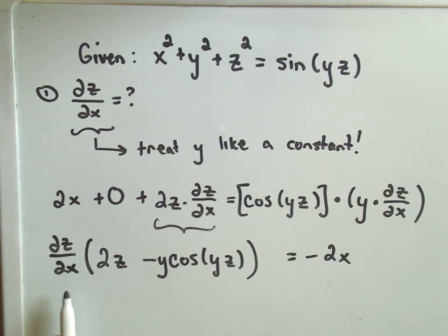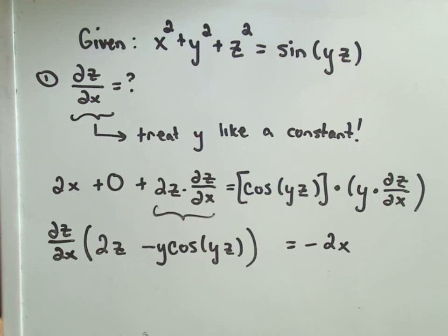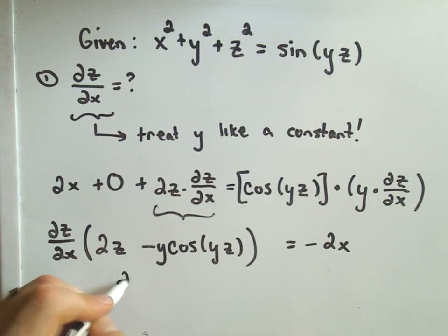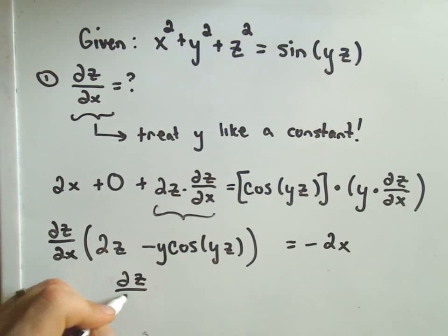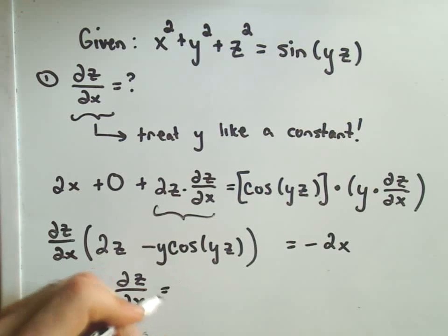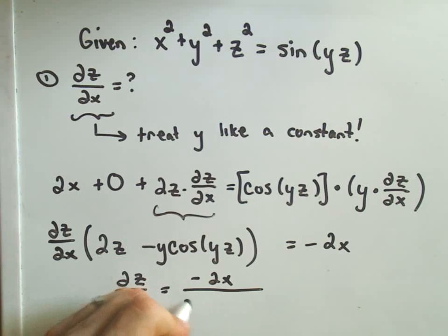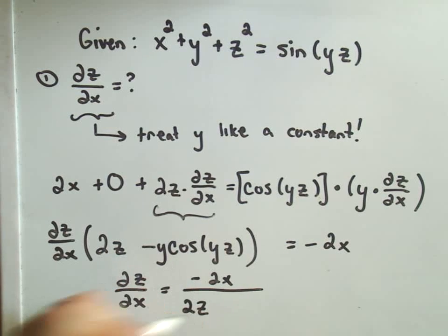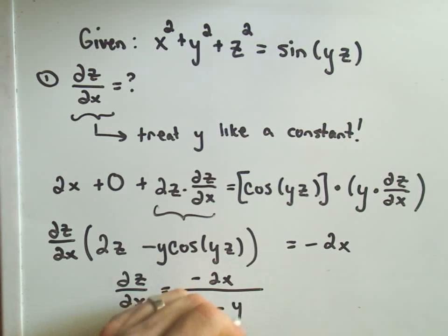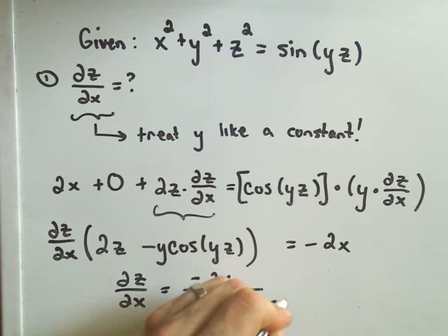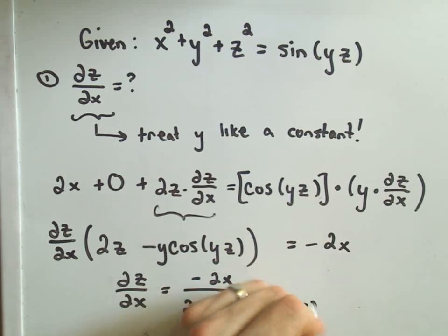And again, just to simply solve for the partial of z with respect to x, all we have to do now is just divide by all this stuff, and hey, we'll be there. So the partial of z with respect to x would simply be negative 2x divided by all this stuff. 2z minus y times cosine of yz.